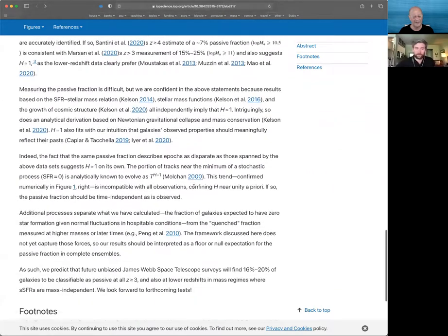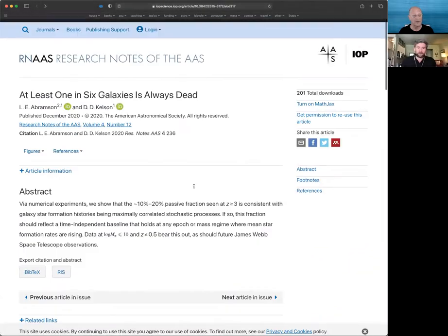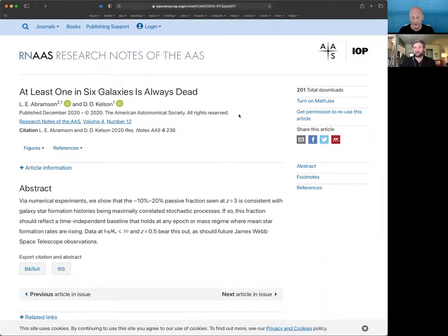Where do we go over the next five years to confirm or refute your one-in-six prediction? Certainly one thing that can be done is you could look at simulations right now and see if this is what they get. We know H equals one histories describe dwarf galaxies quite well, so if you have simulations designed to build dwarf galaxies, we should expect them to produce this behavior. On the observational side, I'm on the JWST ERS team and I'll encourage those folks to make this measurement. It should be dead simple—you don't really have to do any dedicated observation. As long as you've got enough colors to span an SED, anybody should be able to measure their passive fraction.